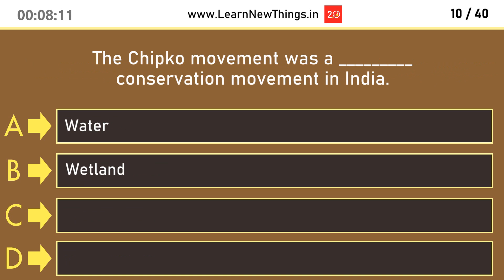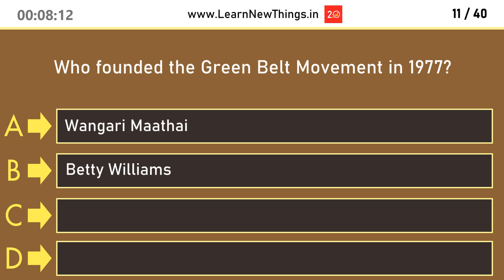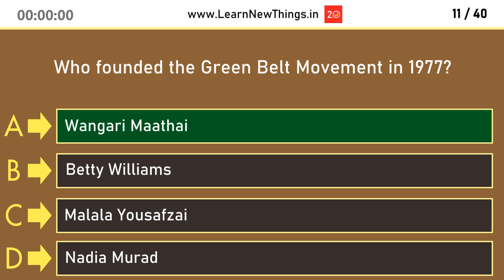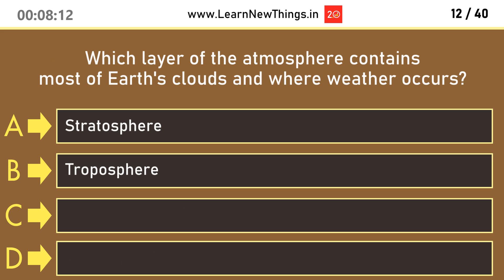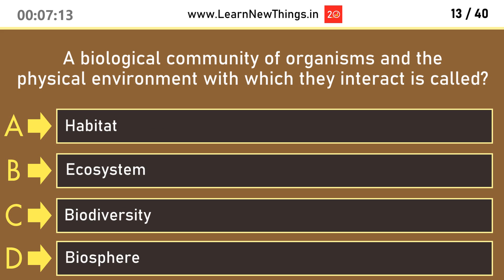The Chipko Movement was a forest conservation movement in India. Who founded the Greenbelt Movement in 1977? Wangari Maathai. Which layer of the atmosphere contains most of Earth's clouds and where weather occurs? Troposphere. A biological community of organisms and the physical environment with which they interact is called Ecosystem.